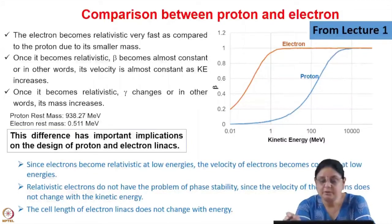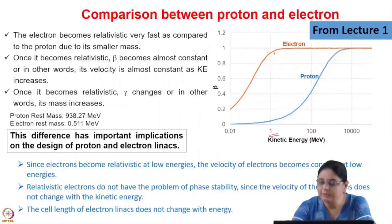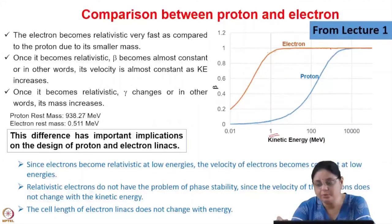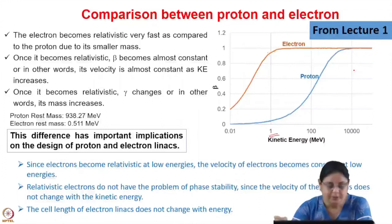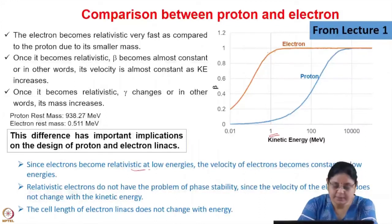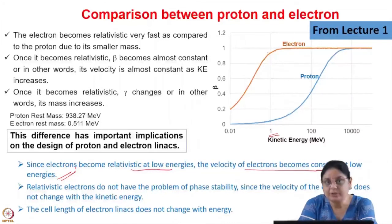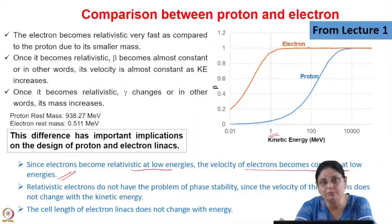Coming back to the comparison between proton and electron seen in the first lecture: even at very low values of kinetic energy — say a few MeV — the electron becomes relativistic, so its velocity becomes constant. As kinetic energy increases, mass is increasing but velocity has become constant. For the proton, since its mass is much greater than that of the electron, this happens at a much higher value of energy. Since electrons become relativistic at low energies, their velocity becomes almost equal to the velocity of light while energy continues to increase.